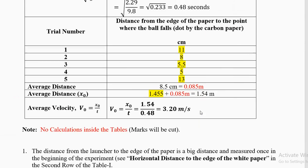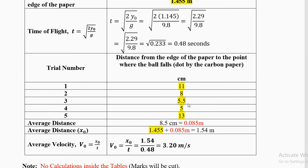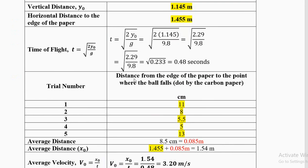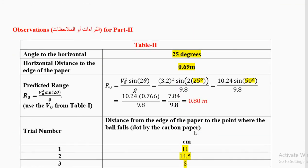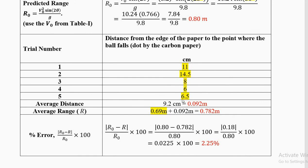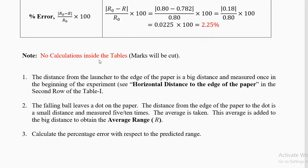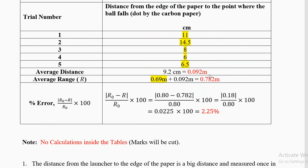These two calculations are similar to what we did in the problem — in the problem we had one data point, here we have 5, so we take the average in both tables. Remember: measure the distance to the edge of the paper and then the small distance inside the paper. Some people try to measure directly from the dot to the launcher, but that is less accurate. Do all calculations outside the table — inside the table just write the final number.